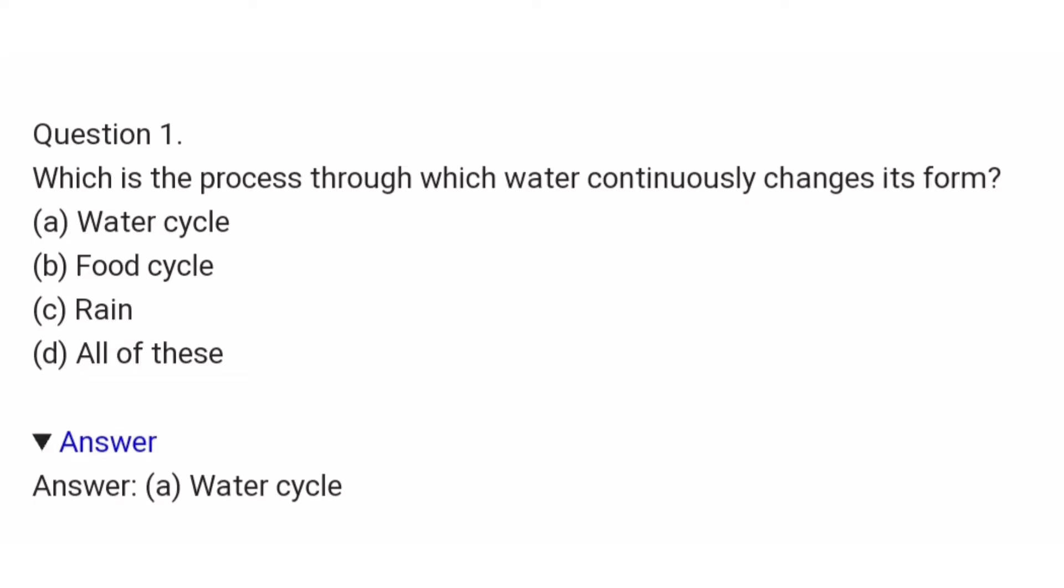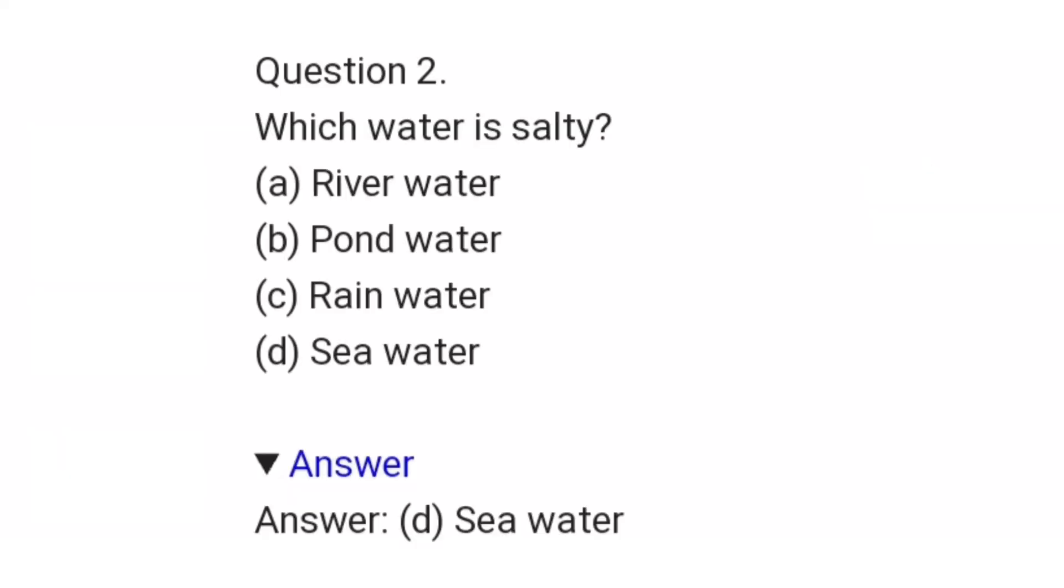The first question is which is the process through which water continuously changes its form: water cycle, food cycle, rain, or all of these. The answer is water cycle. The second question is which water is salty: river water, pond water, rain water, or sea water?